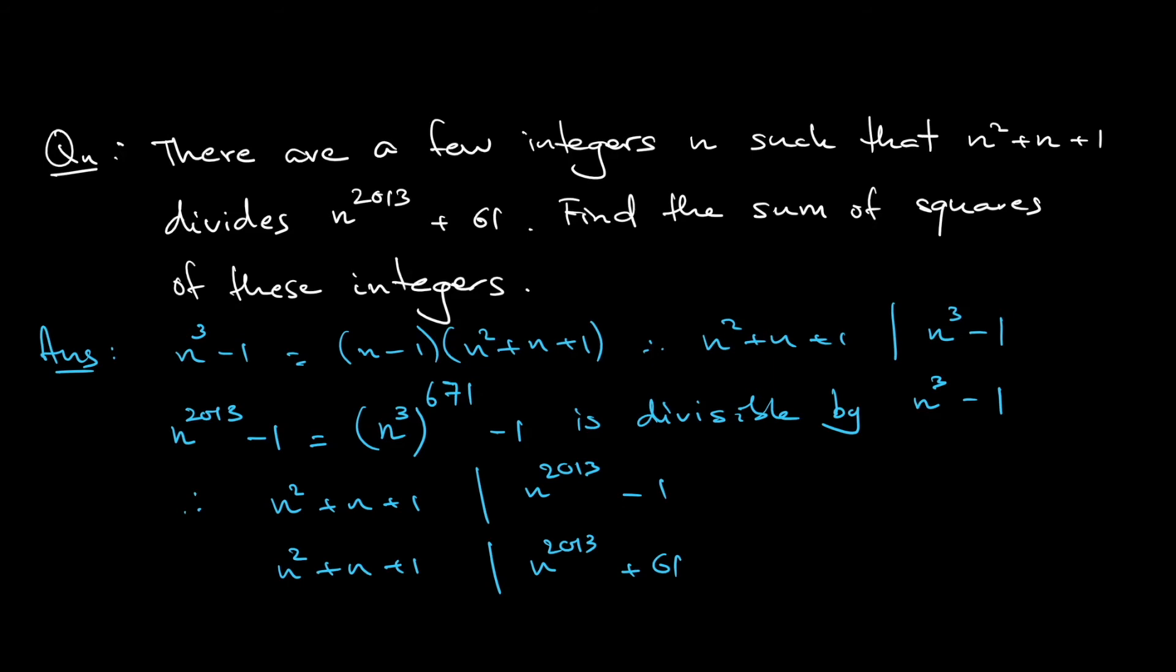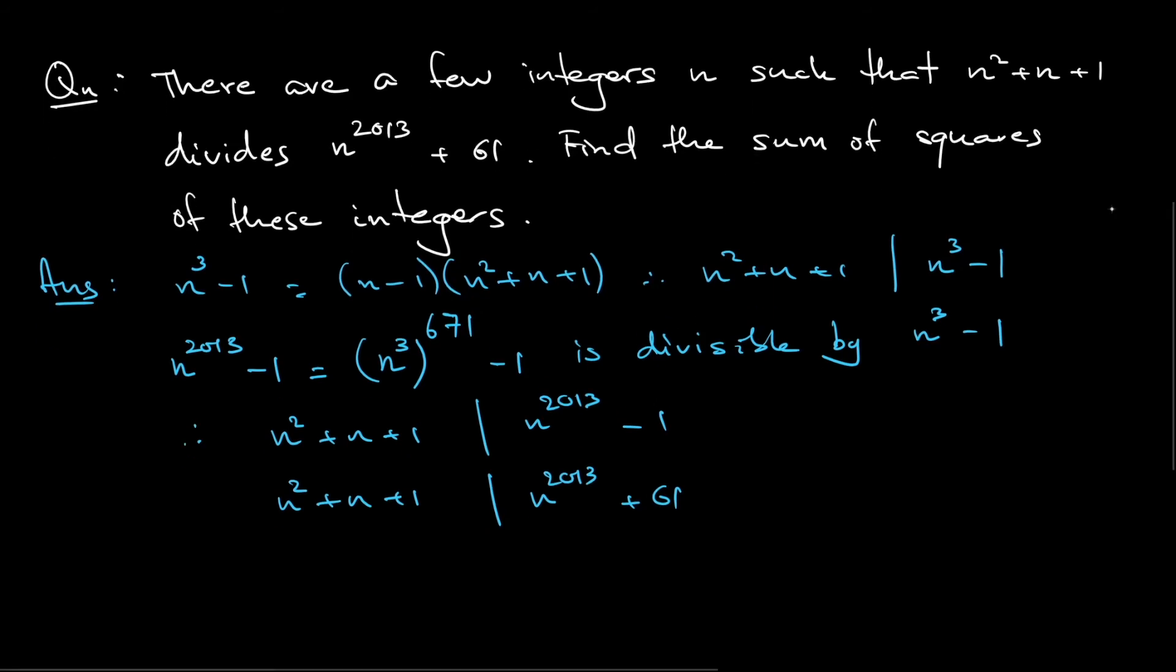n² + n + 1 divides n^2013 + 61. So, what does that mean? Notice that this can be written as n^2013 - 1 + 62, right? This divides this, but I also know that this divides this. So that means that n² + n + 1 needs to divide 62.